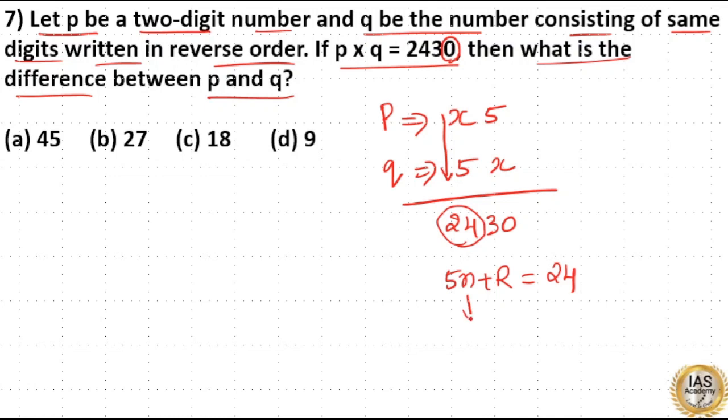Here if I put 6, you can see 5×6 is 30, which is greater than 24. So x can be 2 or 4 here. So the numbers can be 52 and 25, or 54 and 45.